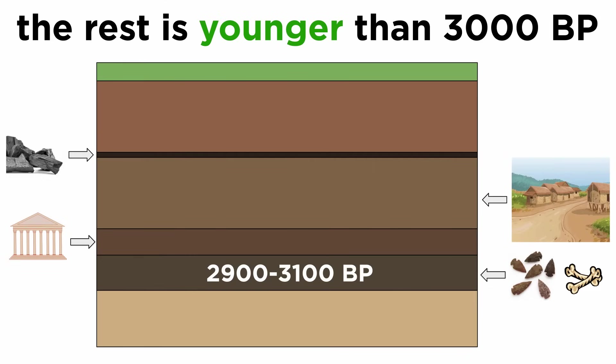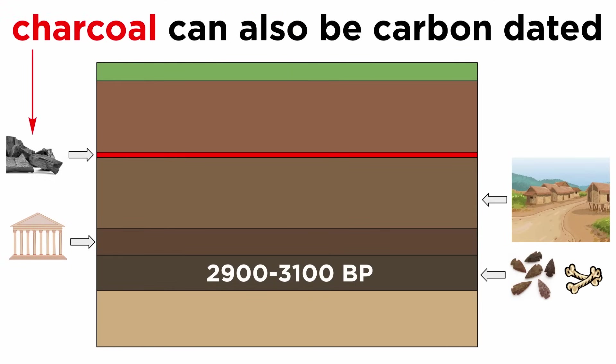If you were an archaeologist looking at this site, what might your next move be? You may remember that there is a burn layer towards the top of the stratigraphic layers, and higher than that we don't see any more human artifacts. As we learned, burned objects preserve the C14 we use to perform radiocarbon dating. If we date this layer, we then would know the entire length of occupation of the site. For example, let's say we get a radiocarbon date of 900 to 1100 BP for the burn layer.